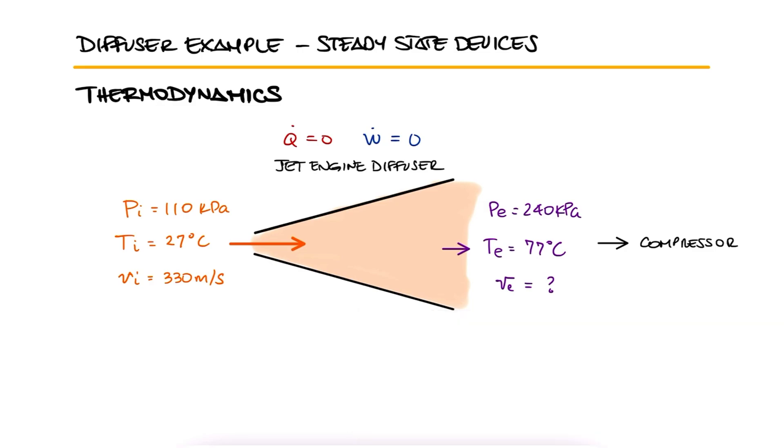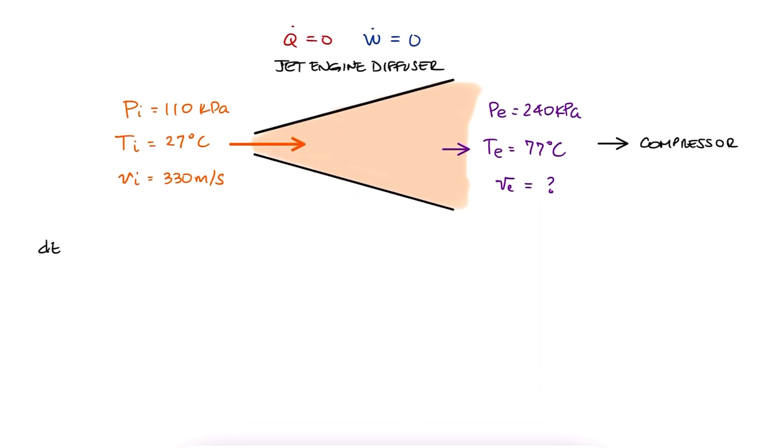This problem is much simpler than our previous example. Using the conservation of energy equation we derived for diffusers in the main lecture video, in combination with the mass conservation equation, we see that the mass flow rates cancel out, and we're left with velocity and specific enthalpy values.